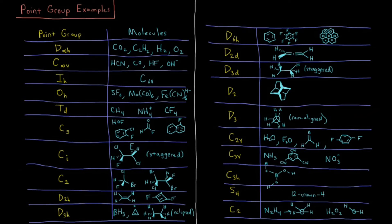D6H, things like benzene, hexafluorobenzene, or coronene. There's that six-fold axis in a plane, lots of symmetry there.